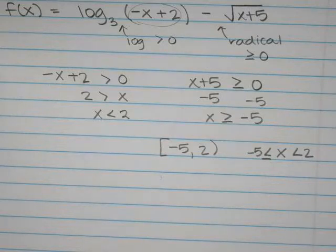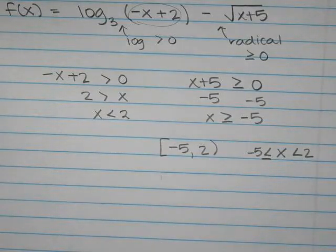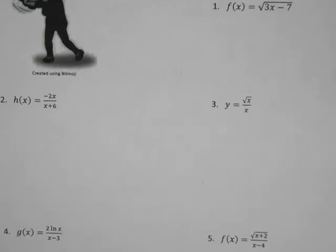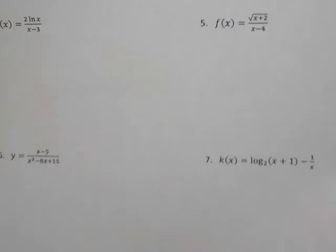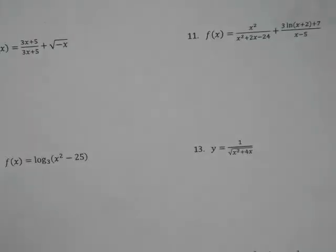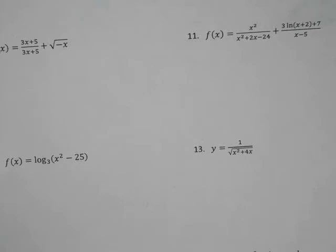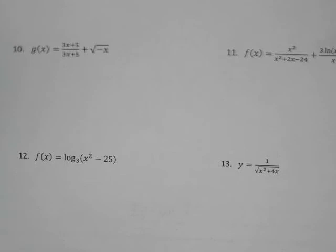Do you want to try some on the sheet, or do you want to see one more example? One more. If you look at the sheet, is there one in particular that makes you nervous? The last one. Problems 12 through 15 all include factoring of stuff that is going to be in an inequality, so we're going to go over more of those. For right now, you're looking at ones like 1 through 11. Can we do 11? Okay, this is going to be our last one.